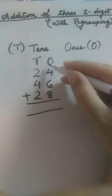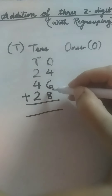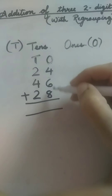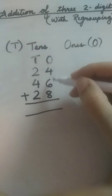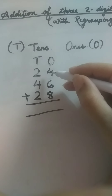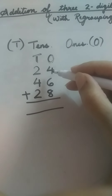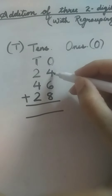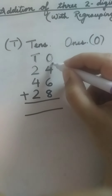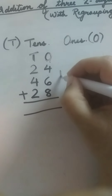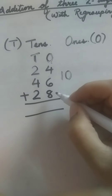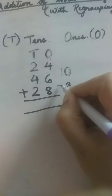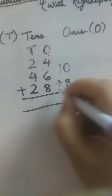We start addition always from the ones place. So first we are going to add the numbers given in the ones place. There are three numbers given in the ones place: four, six, and eight. We can add them in any order, but to make it easy, first we will see if we have any number which adds up to ten. Four and six add up to ten, so four plus six is equal to ten.